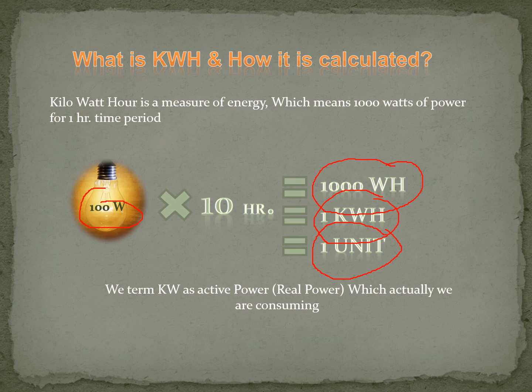We term kilowatt as active power. If we talk about kilowatt, it is called active power — the real power which you are going to consume. Once you are consuming power, you are doing something with respect to that power. Maybe in the house you are running the mixer grinder; in plants and factories you are running different types of motors, pumps, and different equipment, or running a laptop. All of these are consuming active power — that is real power. So we call it active power, or real power.